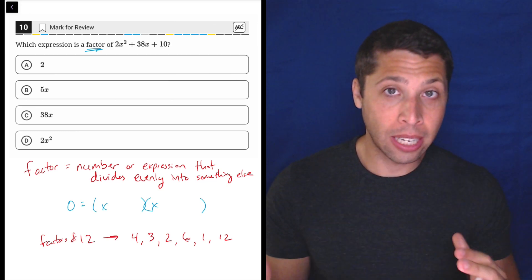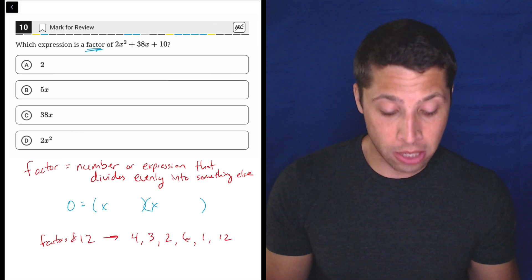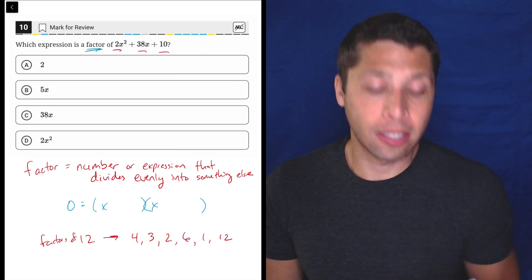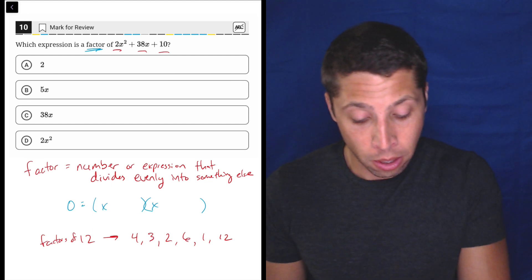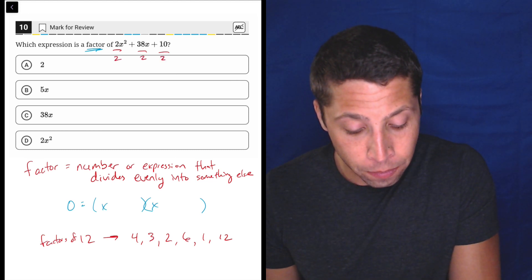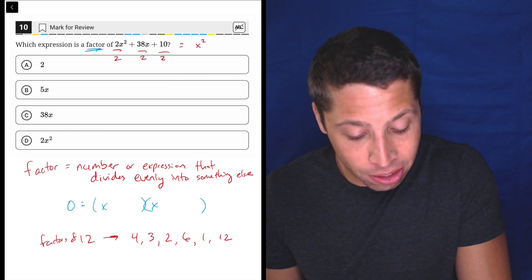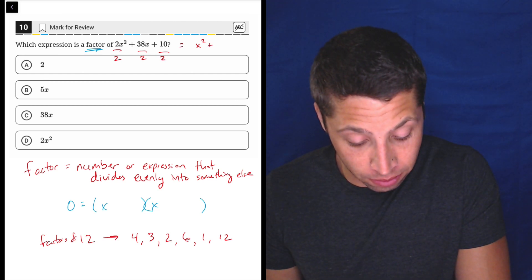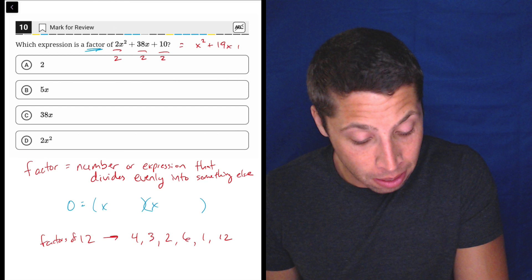So we normally think of numbers, and that's going to be what the answer is here because even though there are all these x's, notice that every term in this expression is divisible by 2. So if we divide it by 2, this would become x squared plus, what is that, 38—so that's 15 and 4—19x plus 5.